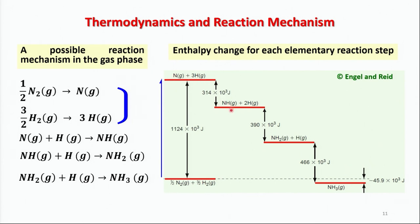After the activation barrier, the pathway is totally downhill in energy and spontaneous. However, the kinetics of the initial step becomes very slow due to this huge activation energy, as predicted by the Arrhenius equation. This energy of activation can be estimated.